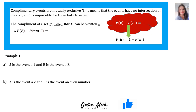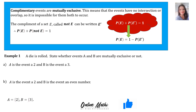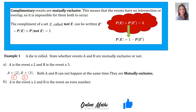Now let's look at some examples. A die is rolled — state whether events A and B are mutually exclusive or not. Number A: A is the event of rolling a 2 and B is the event of rolling a 3, so A = {2} and B = {3}. Both A and B cannot happen at the same time — they are mutually exclusive. There is no intersection between them.